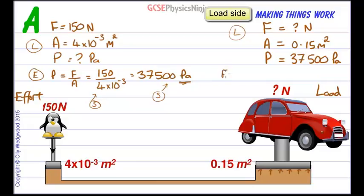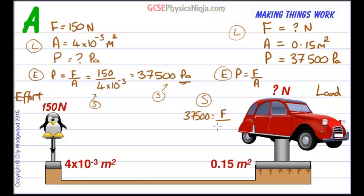Okay, what's the equation? Well, pressure is equal to force over area. Let's put the numbers in. So we know that 37,500 is equal to the force divided by 0.15. So to get the force as the subject of this formula, we need to multiply both sides by 0.15. So we're going to put multiply by 0.15, multiply by 0.15. And so we get 5625 is equal to F.